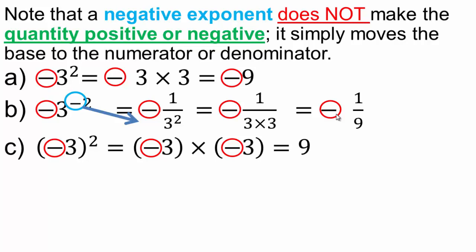Negative 3 times negative 3 is 9. Remember, the negative exponent does not make anything positive or negative. It's whatever is in the base raised to the positive exponent — you evaluate that and the answer is what it is. If there's a negative on the outside, then the negative just carries through.